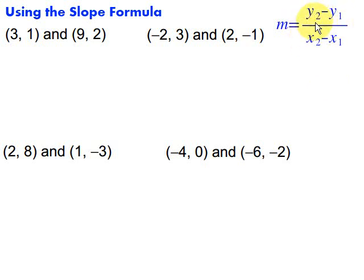So if we decide to take the y from one ordered pair, we need to take the x first from that ordered pair as well. So let's take a look at some examples of working with the slope formula.